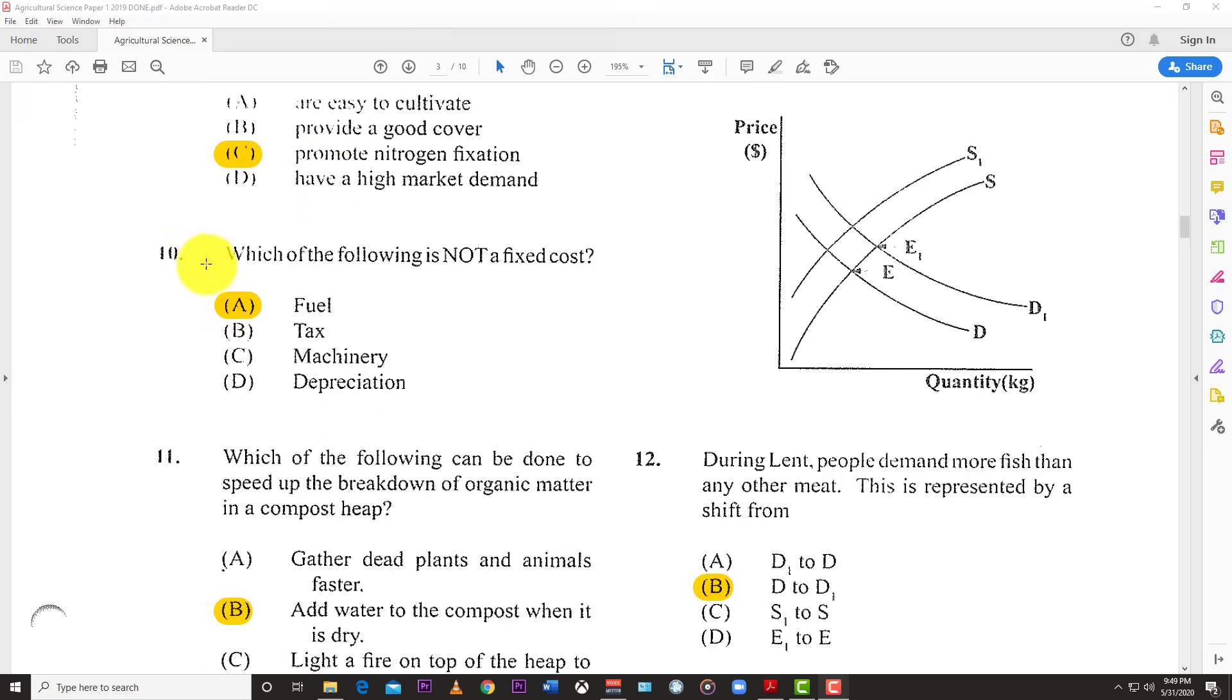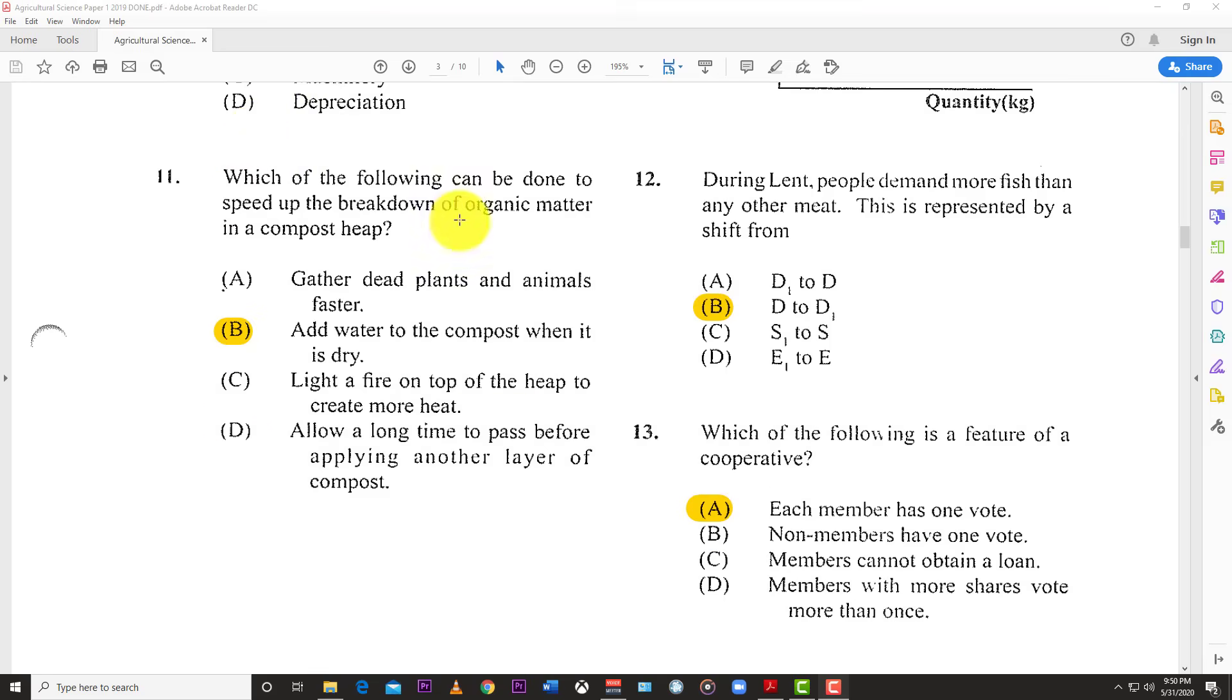Number 9: Legumes are especially important in organic crop farming because they promote nitrogen fixation, adding natural nitrogen to the soil without using chemicals. Number 10: Which of the following is not a fixed cost? Fuel, because fixed costs don't change based on level of production, but fuel changes based on production level.